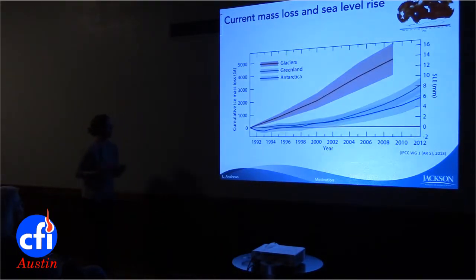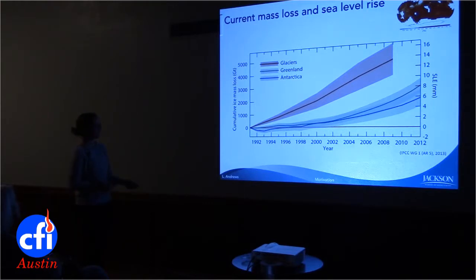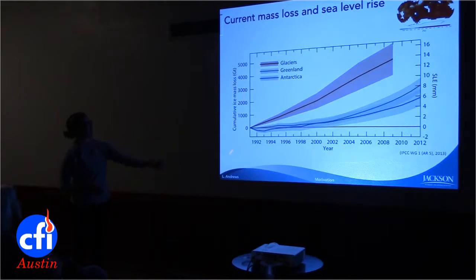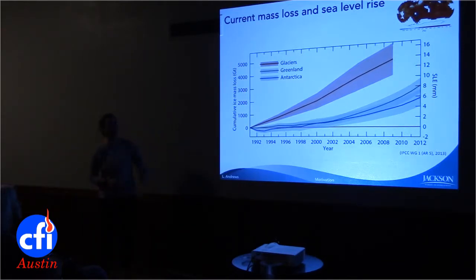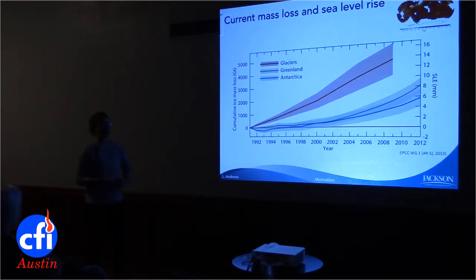When you have warming temperature, you have melting ice in a lot of cases. Here's another plot showing two decades of data on cumulative mass loss. Mass loss for ice sheets is measured in gigatons, which is one cubic kilometer of water — a lot more than a swimming pool, that's for sure.